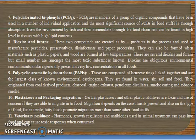Next are dioxins and furans. They can form when materials such as plastic, paper, and wood are burned at low temperatures. Dioxins are ubiquitous environmental contaminants, generally present in very low concentrations. Then there are polycyclic aromatic hydrocarbons (PAHs) — a large class of known environmental carcinogens found in water, air, soil, and food. They originate from coal-derived products, charcoal, engine exhaust, petroleum distillates, smoking, curing, and tobacco.